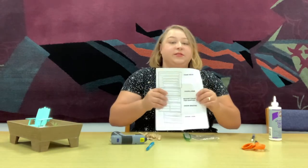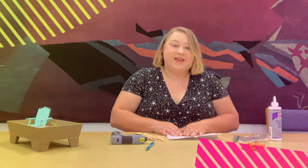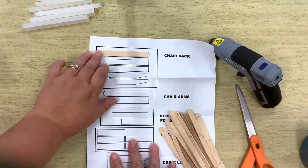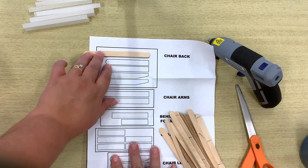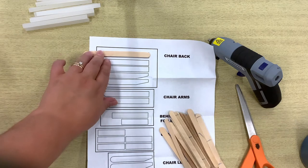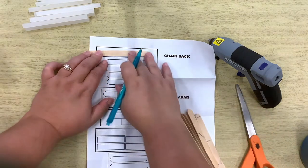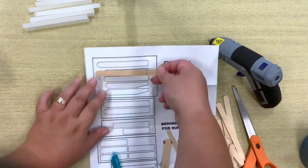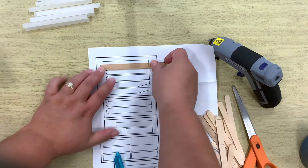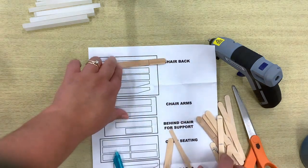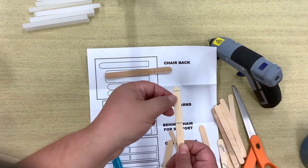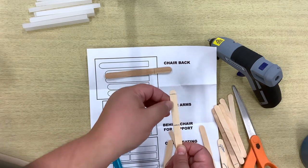Each popsicle stick is actually the same exact size as the marking on there so it'll be easier to mark with the pen on where to cut like this. So I went ahead and I marked all of mine, don't worry about the pen marks because you will paint over this.